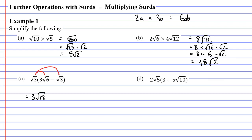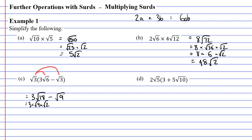We now multiply the square root of 3 by the second term, which is negative square root 3. 3 times 3 is 9, so we get minus the square root of 9. We still need to simplify our expression — what two numbers multiply to make 18? Well, 9 times 2 is 18, so we write this as 3 times the square root of 9 times the square root of 2.